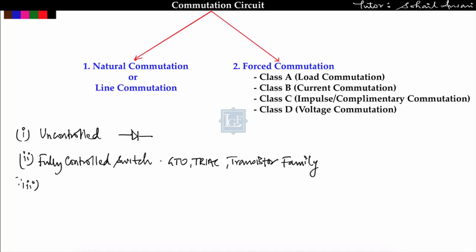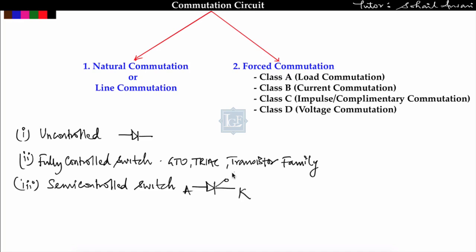The third one is the semi-controlled switch. Semi-controlled switches are those in which only one state can be controlled — either turn-on or turn-off. Example is SCR. In SCR, only we can control the on-state by supplying gate current; this SCR will be on when gate current is not equal to zero. Now if I want to turn off this SCR, it is not in my hand because it is semi-controlled.